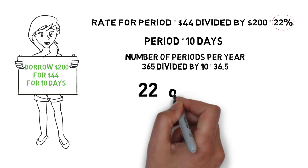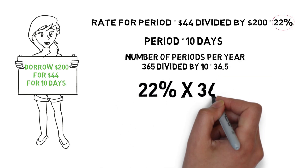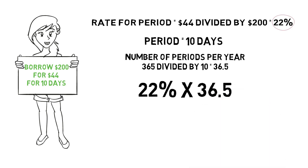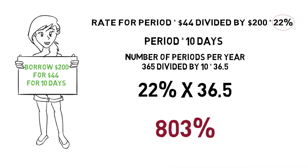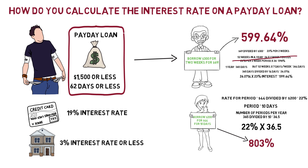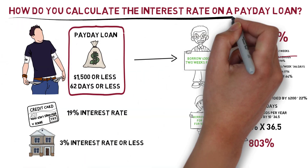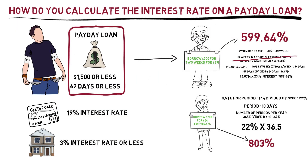Now we simply take 22% and multiply by 36.5. This gives us a simple annual percentage rate of 803%. So borrowing $200 for $44 over 10 days has an annual percentage rate of 803%. And now you know how to calculate the annual interest rate equivalent on a short-term payday loan.